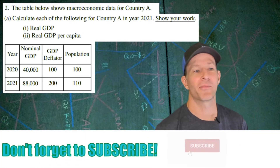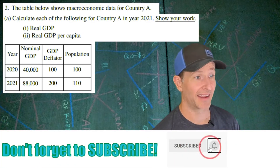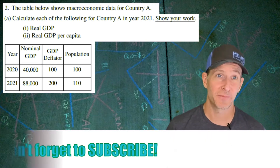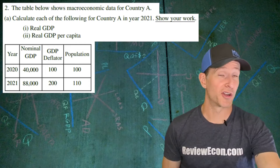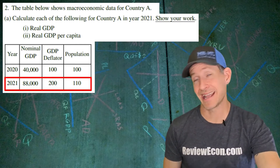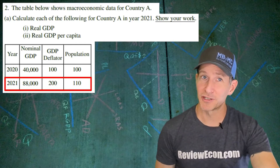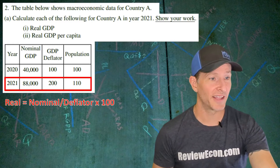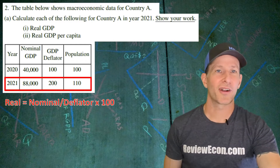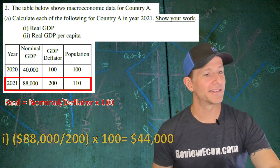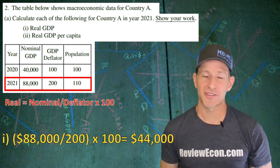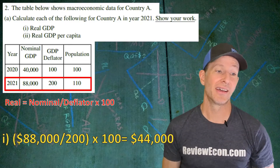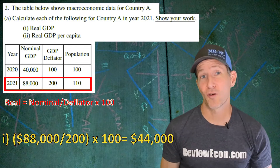This question is all about the macroeconomic data for country A. The first thing we have to do is calculate the real GDP and real GDP per capita for the 2021 data on this table. In order to find real GDP, you're going to take the nominal GDP divided by the GDP deflator times 100. So for part A-I, we're going to take the $88,000 of nominal GDP divided by the GDP deflator for 2021 times 100, and that equals $44,000.